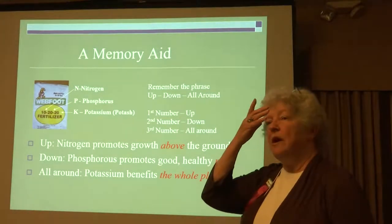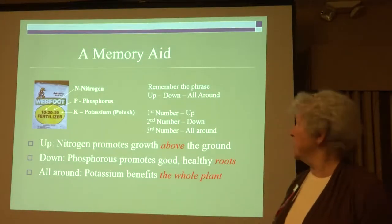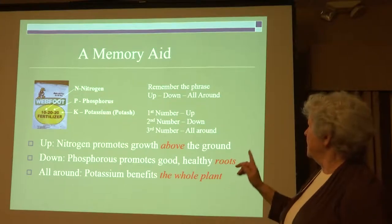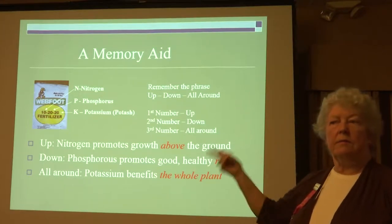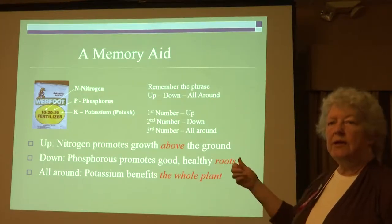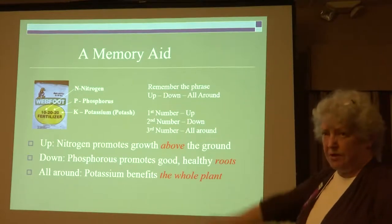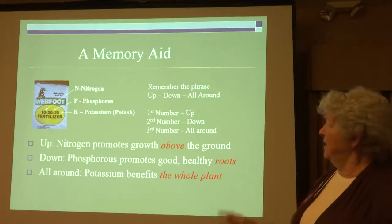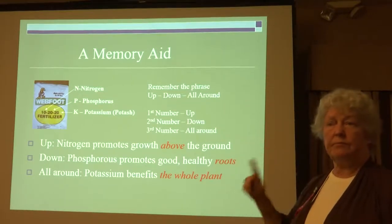Here's a memory aid for NPK: think of up, down, and all around. Nitrogen grows it up. Phosphorus grows it down. And potassium is good all around.